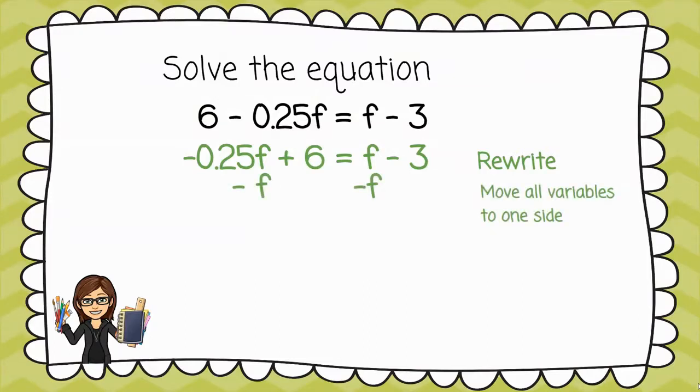Then, I'm going to subtract the f from the right and move it to the left. So, I'm subtracting the f, and that's going to give me negative 1.25f plus 6 equals negative 3.